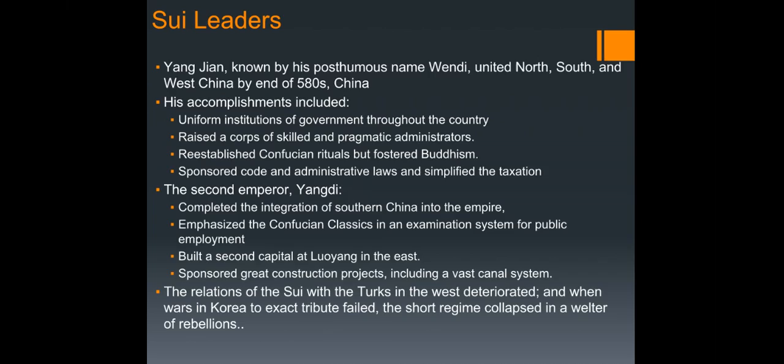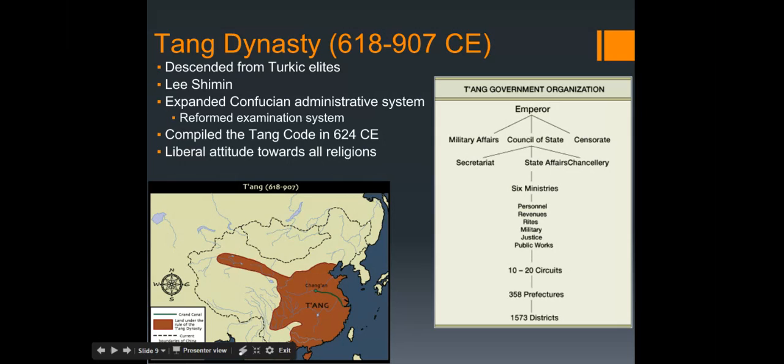On a bright note, that leads us to the Tang dynasty, also called the Golden Age of China, spanning 618 to 907. The Tang are descended from Turkic elites, and as you can see the territory is considerably larger than the Sui. Gaozu was the first emperor and he granted equal amounts of land to each adult male in return for taxes, and continued the trend of local government rule.